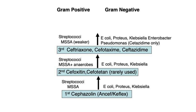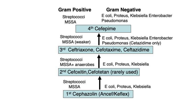Ceftazidime has reduced gram-positive efficacy but is the only third-generation cephalosporin capable of killing pseudomonas. Cefepime, the only fourth-generation cephalosporin on the market, has excellent pseudomonas coverage and also has excellent gram-positive coverage comparable to cefazolin. This very broad-spectrum antibiotic is commonly used in hospital-acquired infections. There is a fifth-generation cephalosporin, ceftaroline, that adds MRSA coverage but otherwise is comparable in coverage to ceftriaxone. It is rarely prescribed.